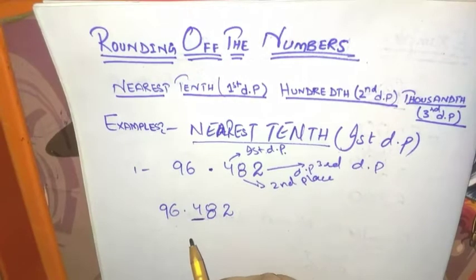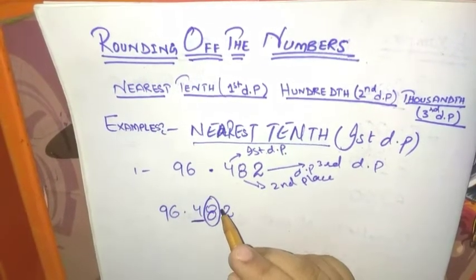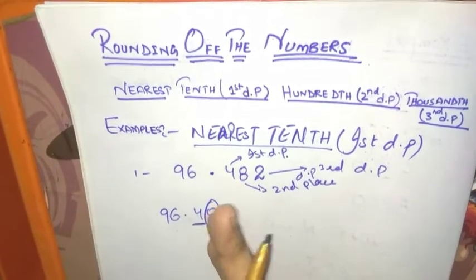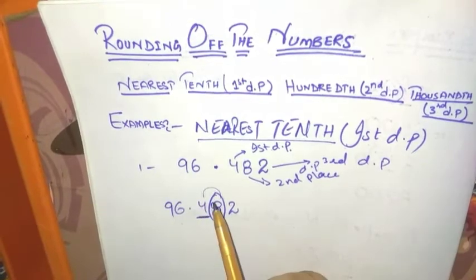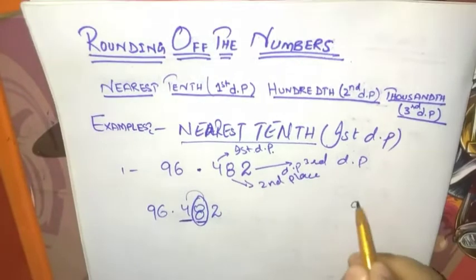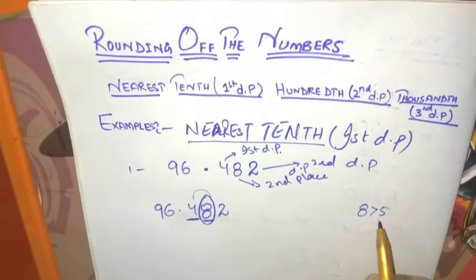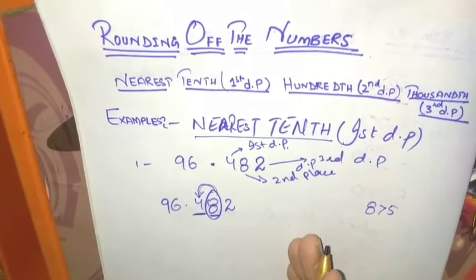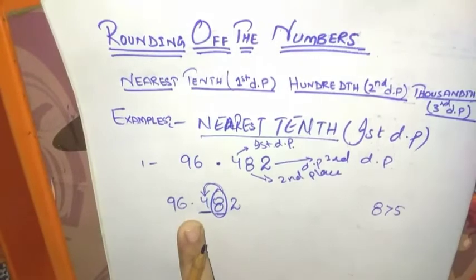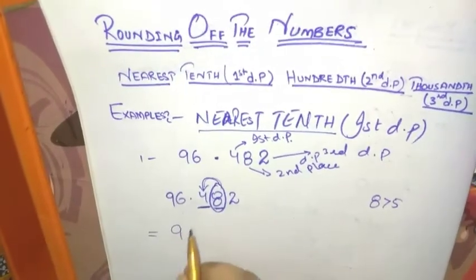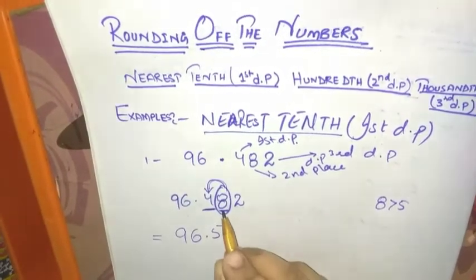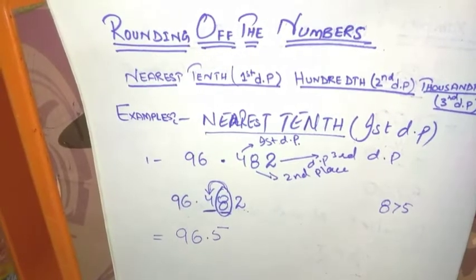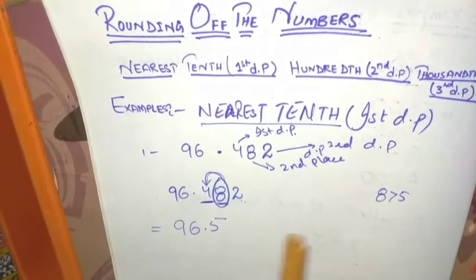Then circle the next digit on its right. If it is 5 or more, add 1 to the digit in the tenth place. We can see this number 8 is greater than 5, so we add 1 to this number. If this number were less than 5, we would not add 1. So this number becomes 96.5 and the other numbers are dropped. This is the rounding off to the nearest tenth, first decimal point.